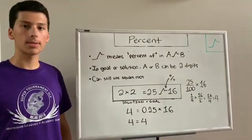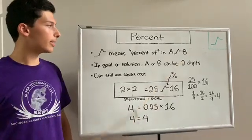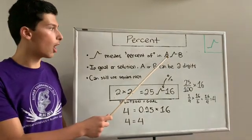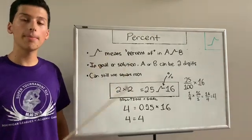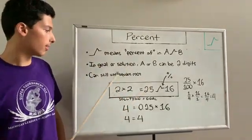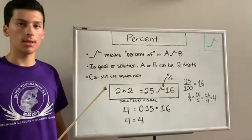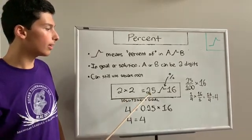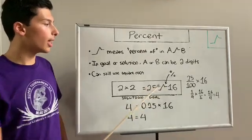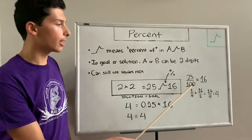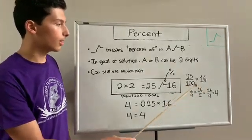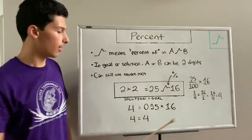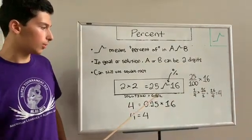So now we have percent. Percent is represented by an upside-down square root sign. It means percent of A, percent of B. So you take A, and you turn that into a percent of B. So in a goal or solution, A or B can be two digits as long as you're using it with the percent sign. You can still use the square root sign like normal. Percent is not required for all the square root signs. So if you look in this example here, the goal is 25% of 16. So you take A, and you turn it into a fraction divided by 100. That's the percent. And you multiply it by B, which is 16. 25 divided by 100 can be simplified to 1 fourth. A fourth of 16 is 16 divided by 4, which is equal to 4. So 4 would equal 2 times 2. 4 would equal 4.